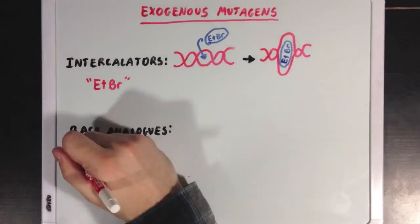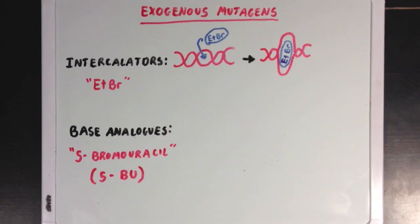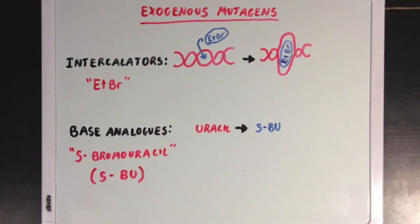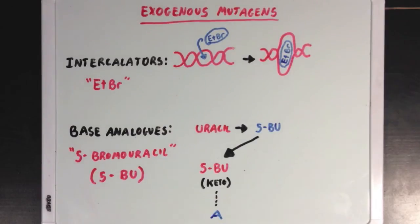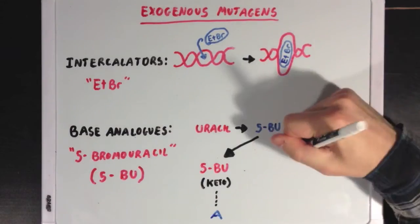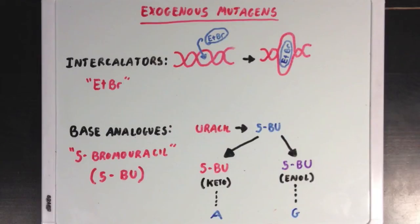Base analogs, like 5-bromouracil, also called 5-BU, pretend to be a certain base but then act differently than that base normally would. 5-BU is an analog of uracil and looks a lot like it, but once incorporated into DNA, it can shift between two different forms. In its keto form it pairs best with adenine, while in its enol form it pairs best with guanine. 5-BU can convert between these forms through a tautomerization reaction, and you can see how this base analog might induce mutations in a DNA strand.